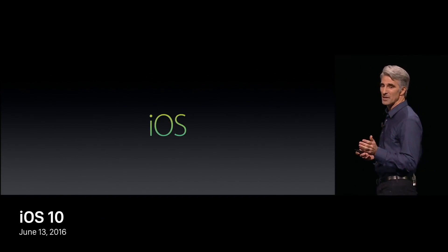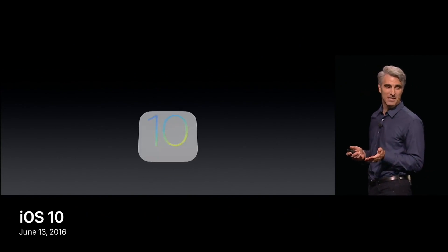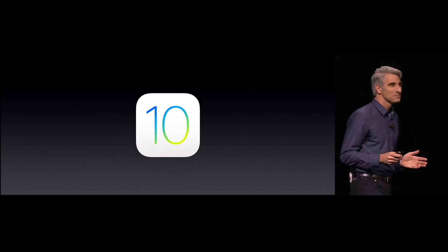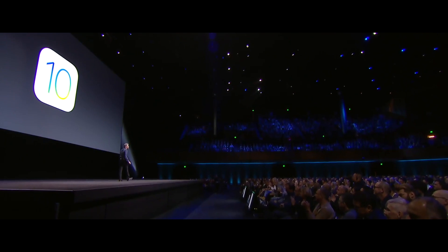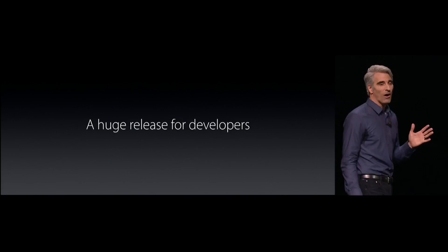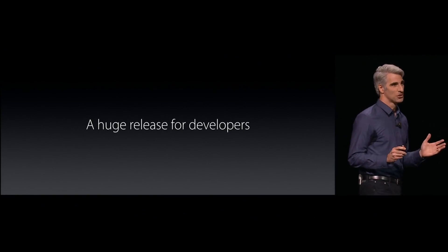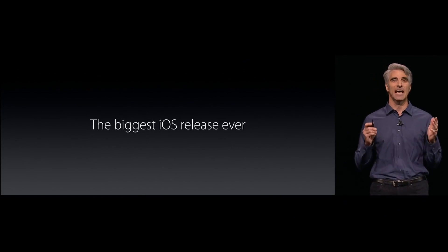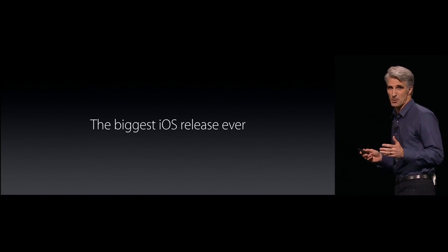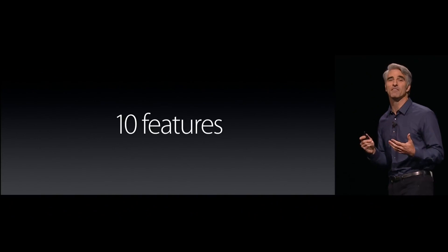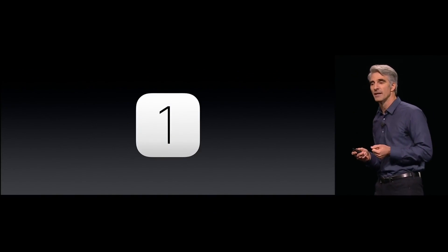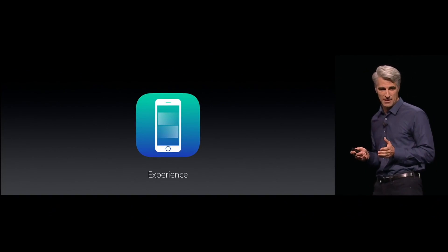Apple announced iOS 10 on June 13, 2016, and it was released three months later on September 13th alongside the iPhone 7 and 7 Plus. With this release, Apple dropped support for devices using an A5 or A5X processor, which was the iPhone 4S, iPad 2, 3rd-gen iPad, original iPad Mini, and 5th-gen iPod Touch. iOS 10 also had limited support on the iPhone 5, 5C, and 4th-gen iPad since those devices had 32-bit processors.